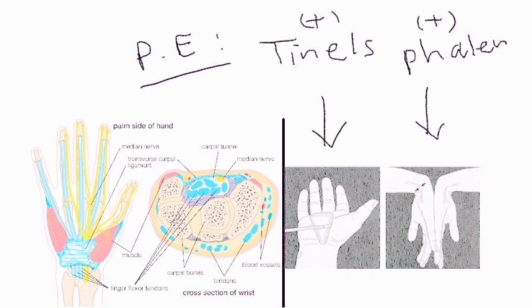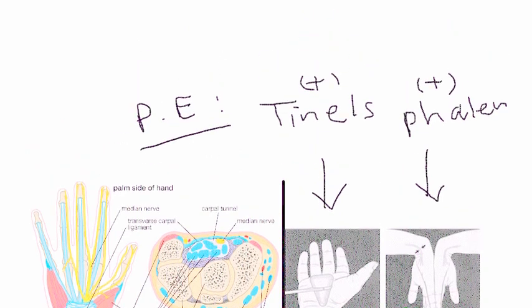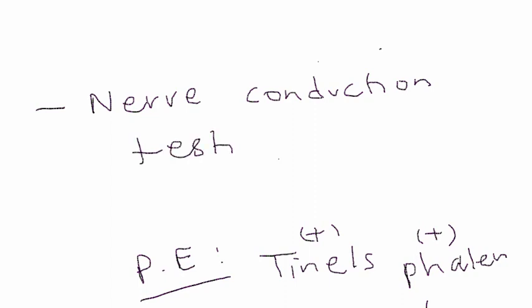There's another test you can do if further testing is necessary, and this involves testing nerve conduction. Neurologists do this a lot. Neurologists will do the nerve conduction. I've seen this done in neurology offices.